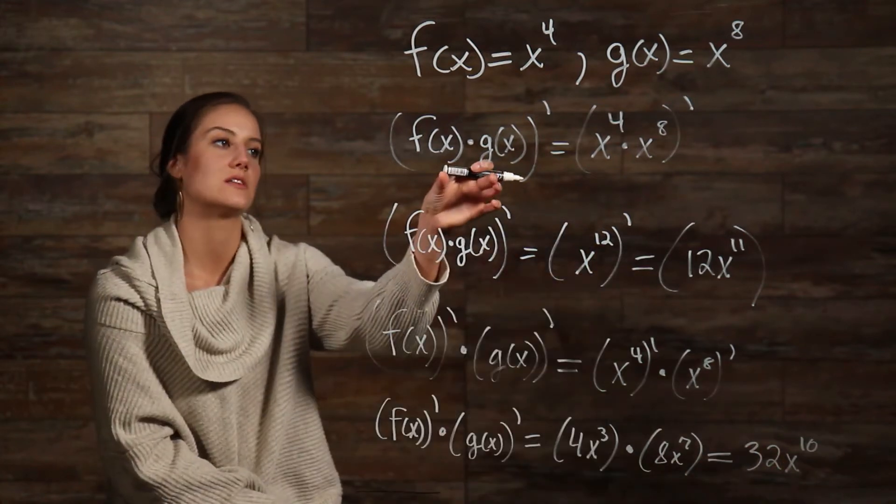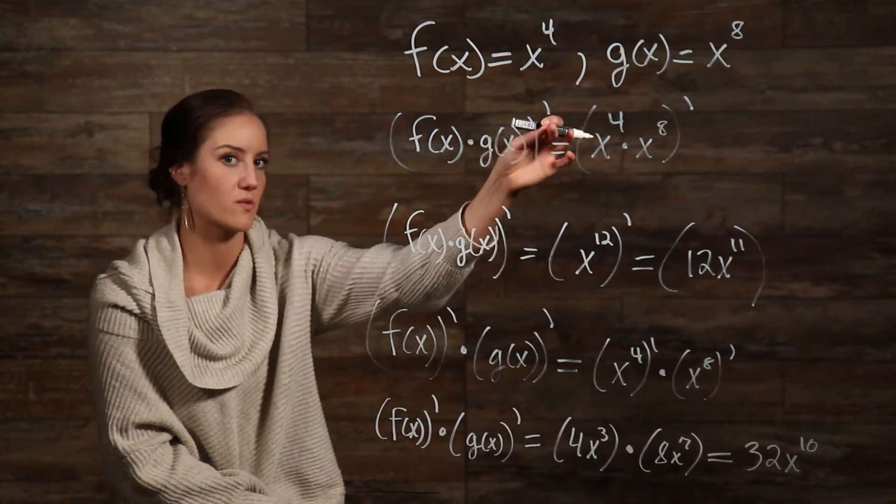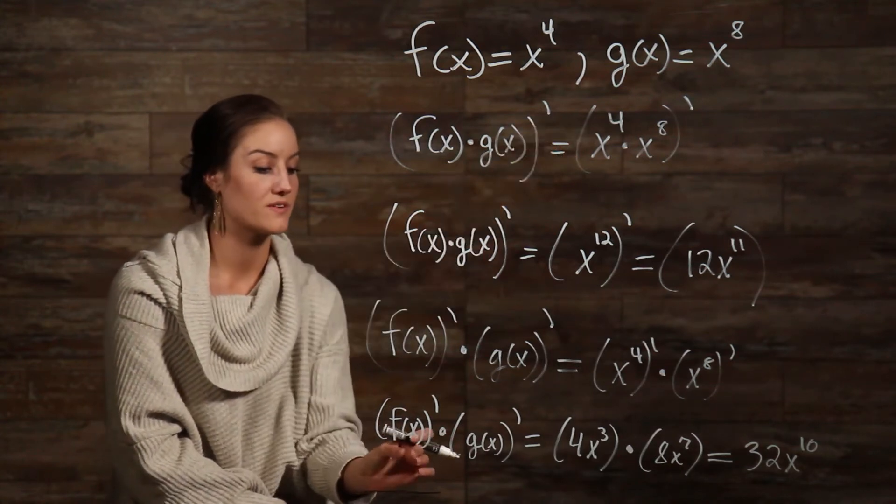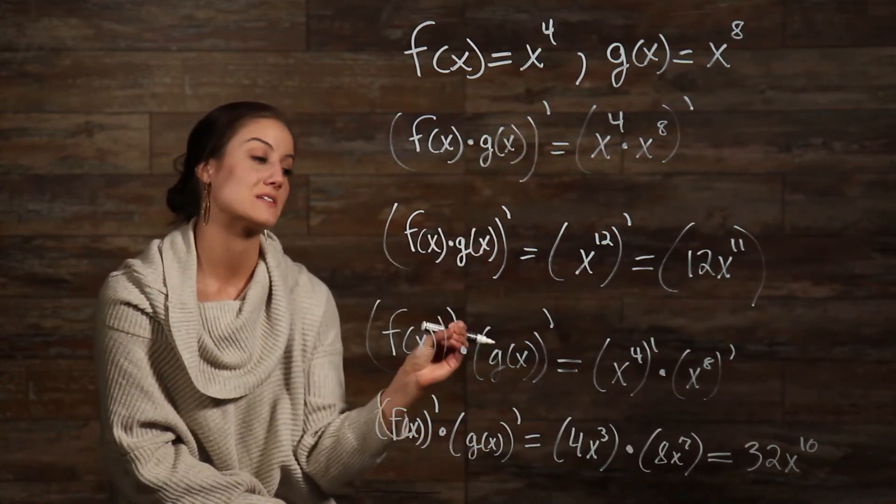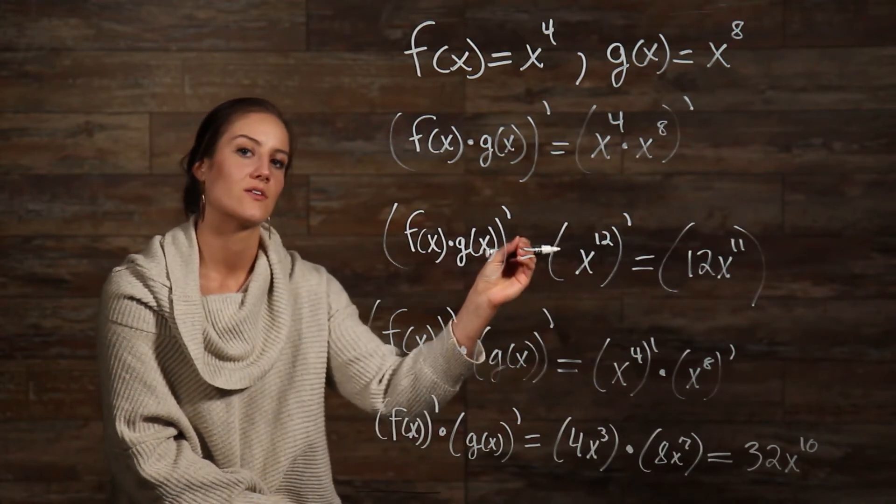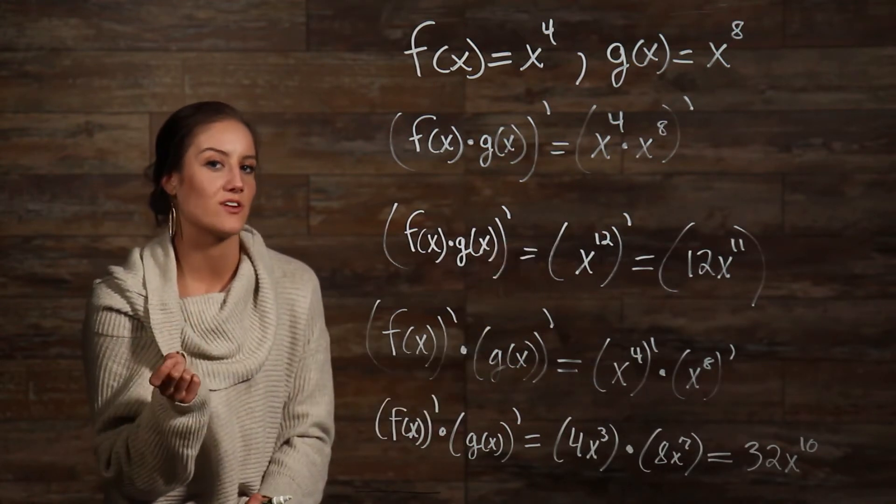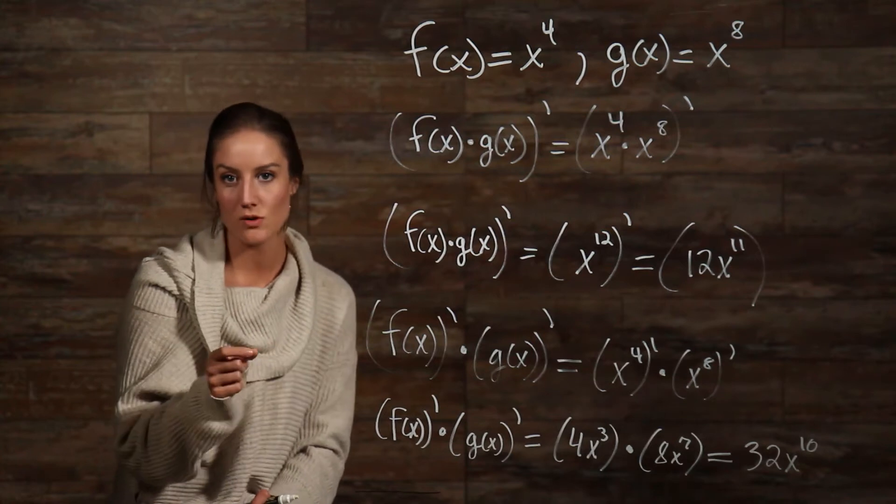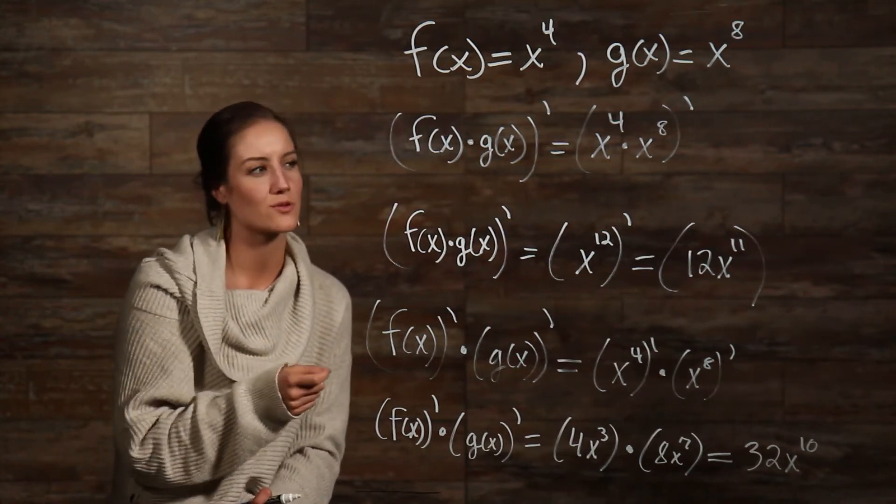So, we can see that when we multiply these two functions together and then take the derivative, and then when we take the derivative of the function separately and then multiply them together, we don't get the same answer. If we try using the exact same functions to apply this same concept with quotients, we can see that we'll have a similar result.